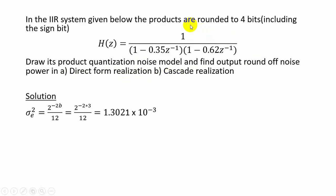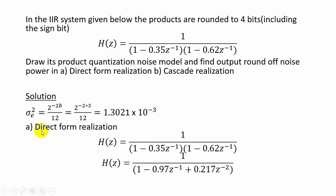In the problem statement it is given that the products are rounded to 4 bits including the sign bit. So we can find the input quantization noise error: σe² = 2^(−2b) / 12, where b corresponds to the number of bits excluding the sign bit. Here b = 3, so σe² = 2^(−6) / 12 = 1.3021 × 10⁻³.